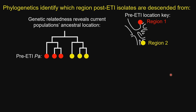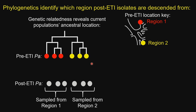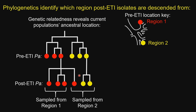To infer the ancestor location of post-ETI isolates, we build a phylogenetic tree using the pre-ETI isolates, then add the sequenced post-ETI isolates and look for patterns of descent. For example, isolates descended from region one are color-coded red, from region two yellow, and so on. An isolate sampled in region two but descended from region one is an example of what migration looks like in our data. In the real dataset we analyze about 800 isolates per subject.